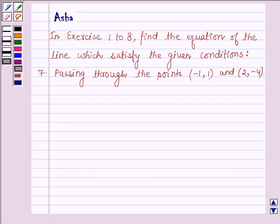Hello and welcome to the session. Let us solve the following question which says: In exercise 1 to 8, find the equation of the line which satisfies the given conditions. Number 7: Passing through the points (-1, 1) and (2, -4).